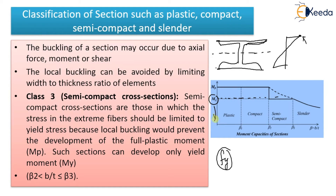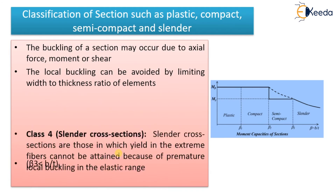Semi-compact sections will only develop the yield moment My — they will not go up to the plastic moment Mp. Only plastic and compact sections go up to the plastic moment. Semi-compact sections go only up to the yield moment, and slender sections are even below that. In terms of beta, the b/t value for semi-compact sections will be greater than beta 2 and less than beta 3.